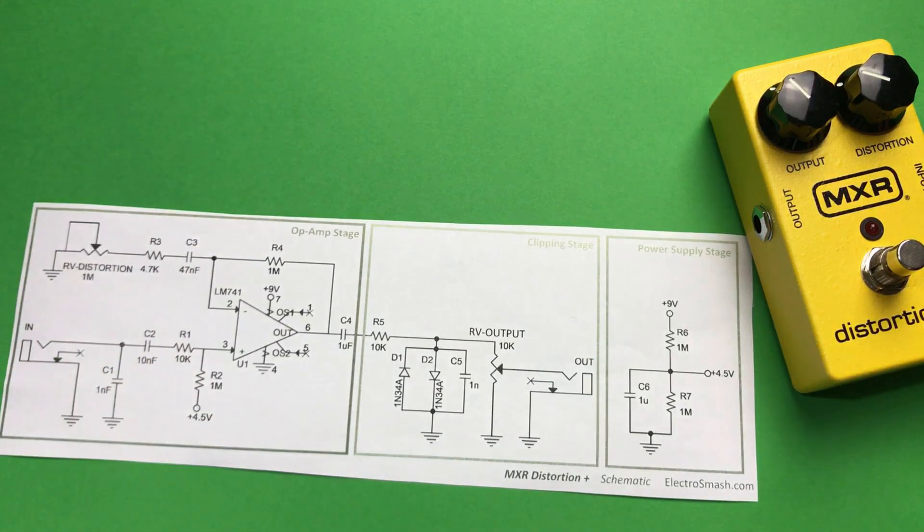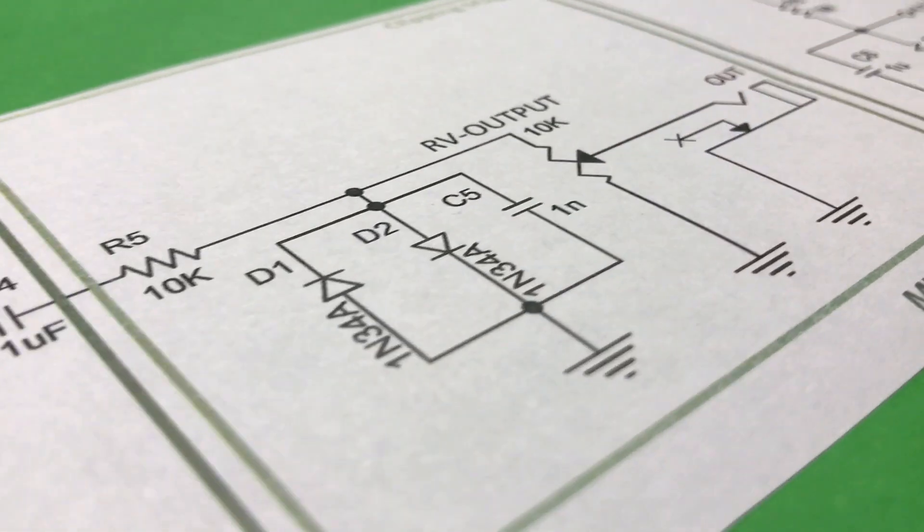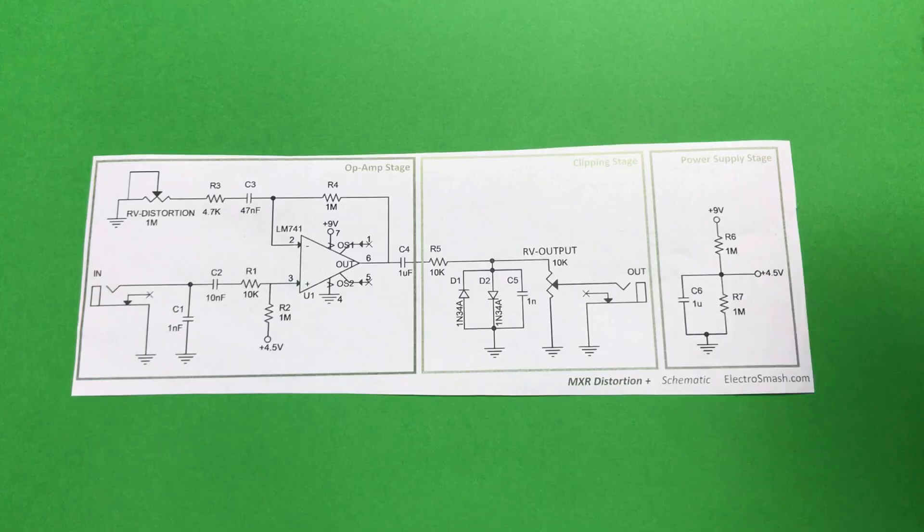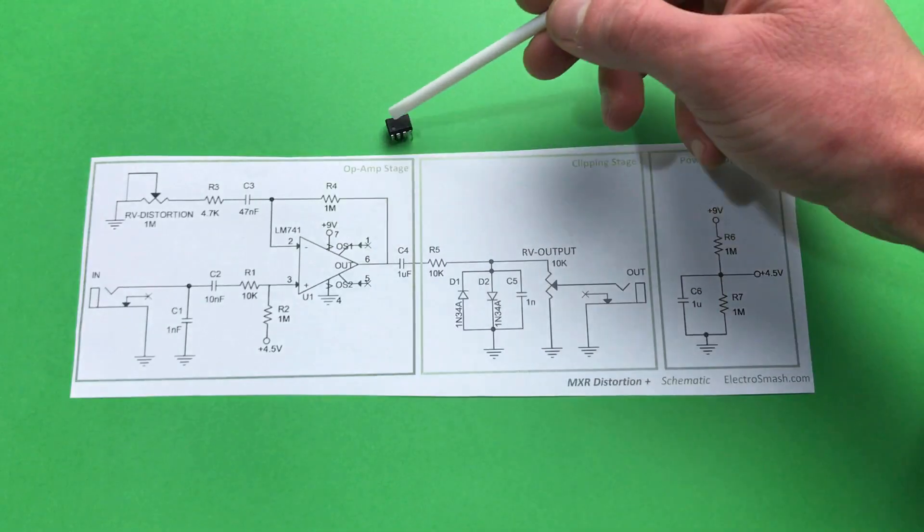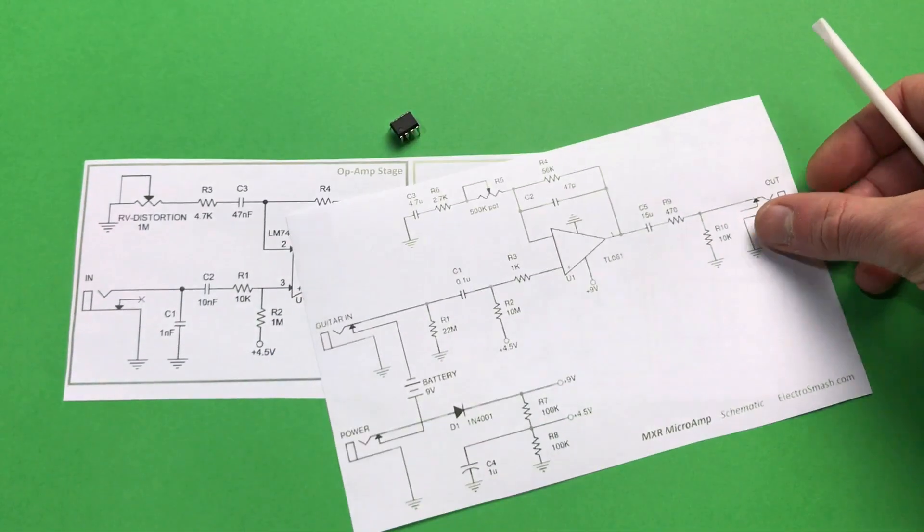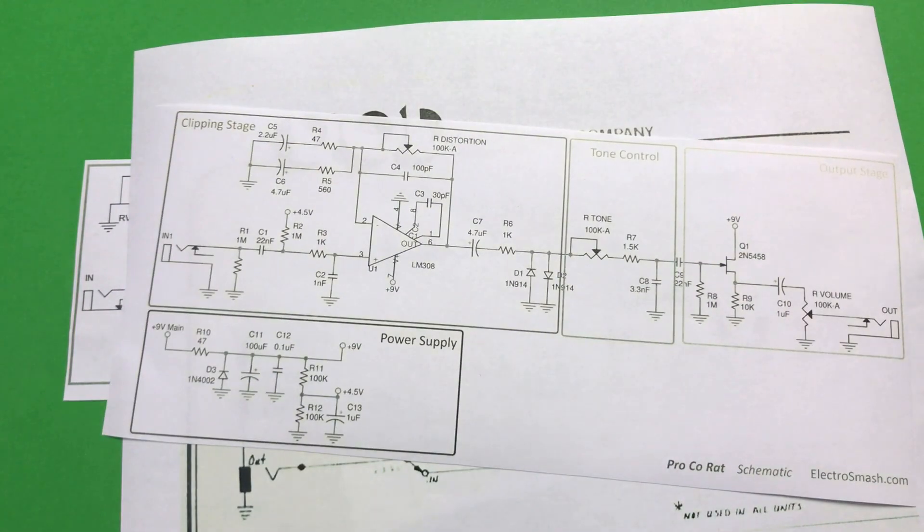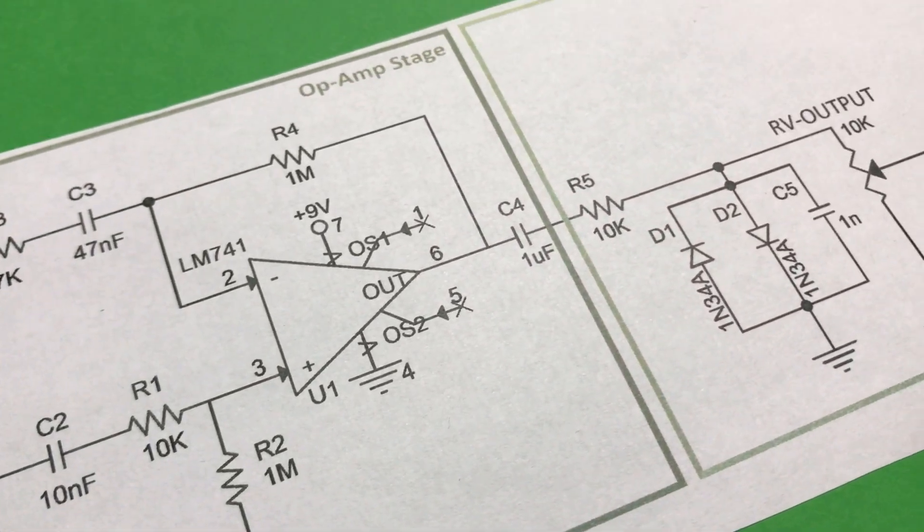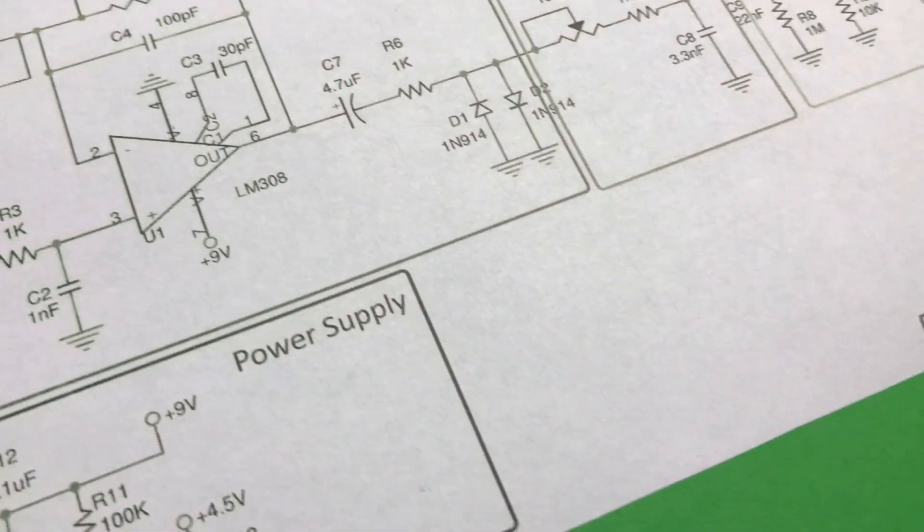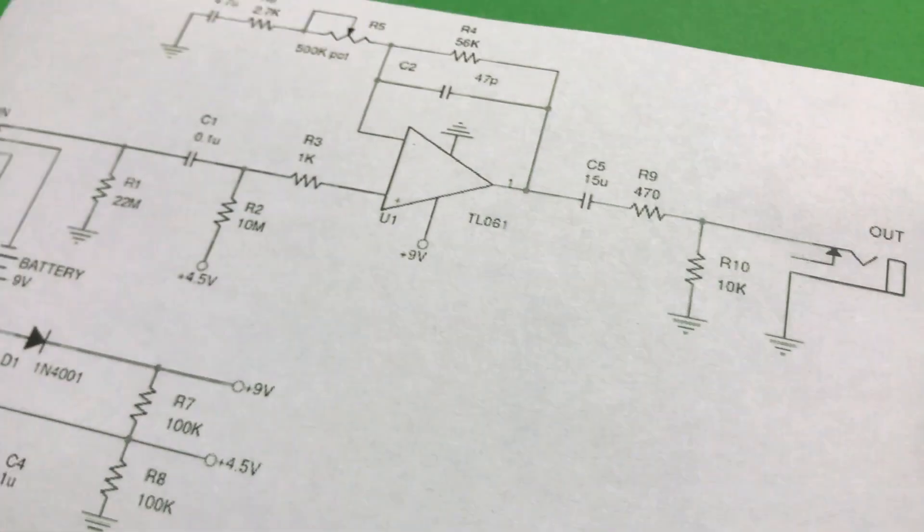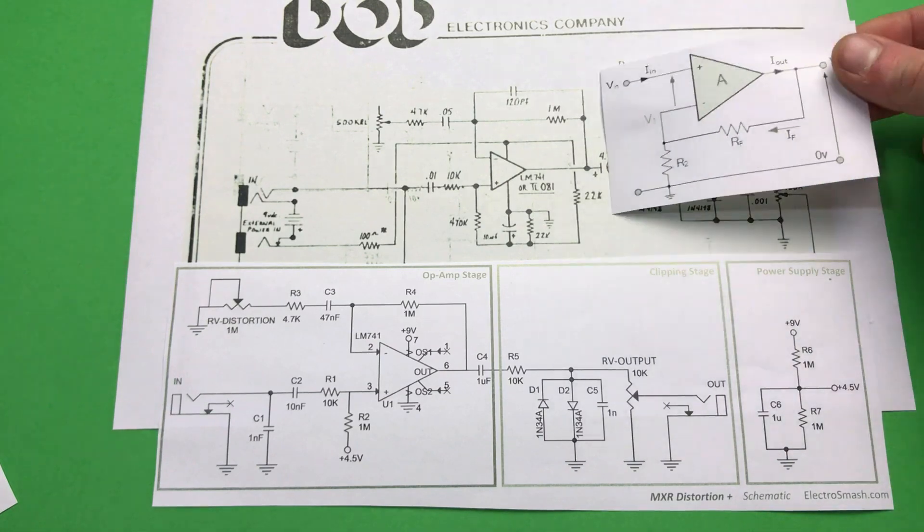This is Distortion Plus pedal by MXR and this is the schematics. It's a very simple distortion pedal based around one single op-amp. Here you can see schematics of MXR Microamp, DOD 250, and the Proco RAT. As you see, schematics of all those pedals are very similar. So are they clones of each other? Are they clones of clones?